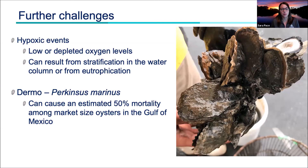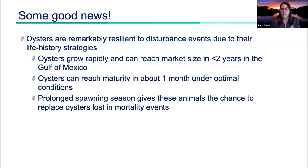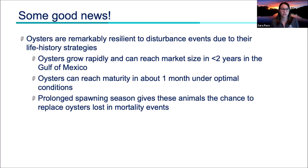A particular disease concern in the Gulf is Perkinsus marinus, a pathogenic protozoan known as dermo, which can cause an estimated 50% mortality among market-sized oysters in the Gulf every year — a pretty significant source of mortality. Despite all of this, oysters are remarkably resilient. They grow rapidly, reaching three inches — harvestable size — in 18 to 24 months in the Gulf. They reach maturity in about four weeks under optimal conditions, and their prolonged spawning season gives them the chance to replace oysters lost in mortality events. A spring mortality event may be followed by a successful recruitment event shortly after, if some oysters survive.